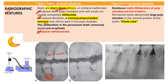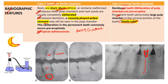In coronal dentin dysplasia, there is complete obliteration in deciduous teeth, which is not pre-eruptive. In permanent teeth, you see a thistle tube appearance — similar to a thistle tube used in chemistry labs, which has a funnel at one end. In the coronal portion, the dentin is not completely obliterating the pulp, but leaving behind a thistle tube shape. A helpful mnemonic: for the root, you have crescent; for the crown, you have thistle — funnels for the crown and crescent for the root.